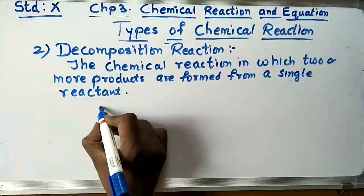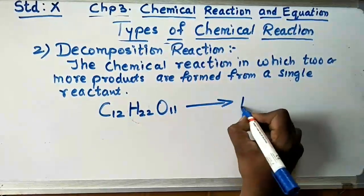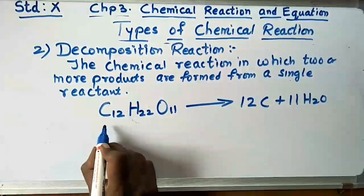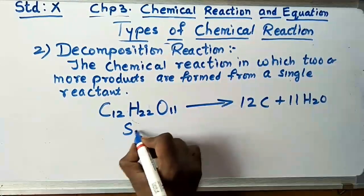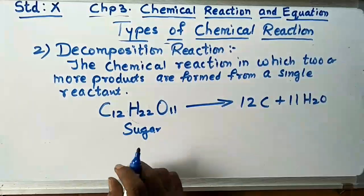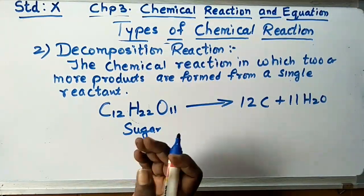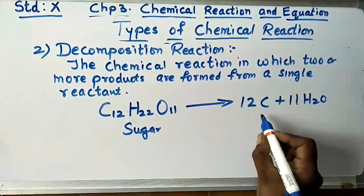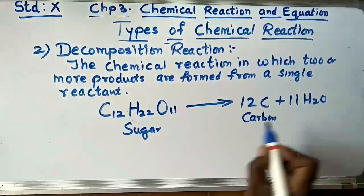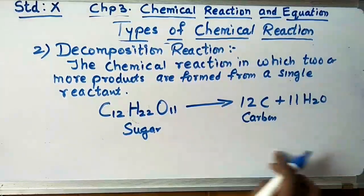Let us take some examples of decomposition reaction. C12H22O11 (which is sugar) gives 12C plus 11H2O. When you heat sugar, carbon is left behind and water is released. So carbon is obtained separately and water comes out — this is a decomposition reaction.